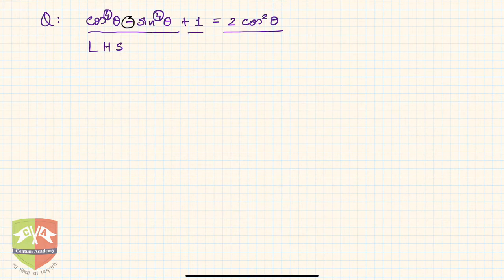The moment I see a power 4 I know power 4 is nothing but square of square. So LHS can be written as (cos²θ)² - this is cos⁴θ right. And why am I reducing it to square? Because I know some relationships which involve cos²θ and sin²θ.